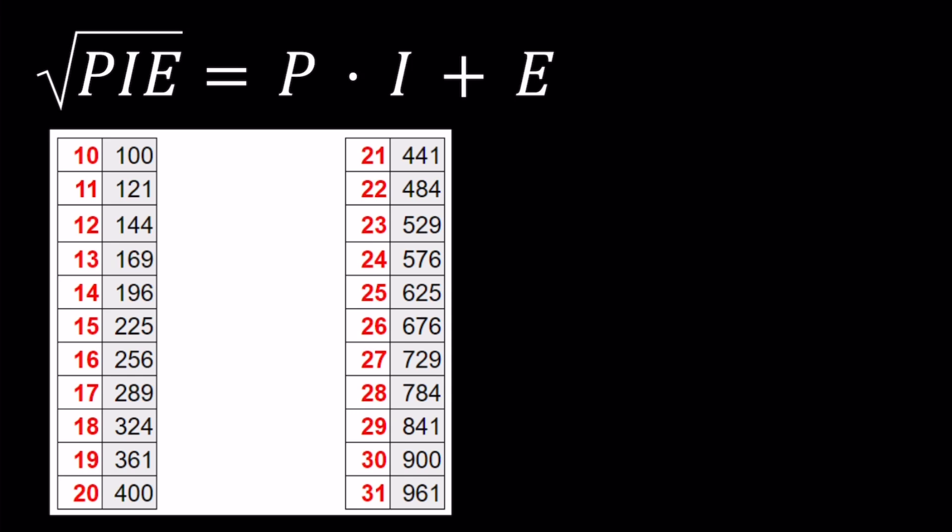Since P, I, and E are distinct or different digits, we're going to eliminate the cases where any digit repeats. For example, 100 has two repeating digits, it has two zeros, so we're not going to take that.